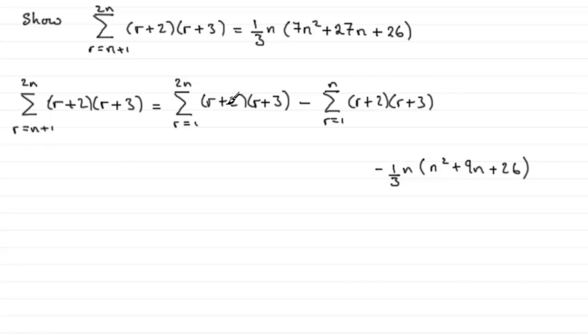But can you see, all we need to do now is wherever we see an n in this answer, we just need to replace it with 2n. So what we're going to have for this first part is essentially 1/3 of, instead of n, it'll be now 2n. Then we've got n² here, which now becomes (2n)². Plus 9n, so that becomes plus 9 times 2n, and then plus that 26.